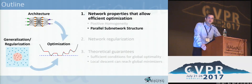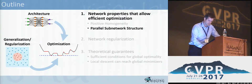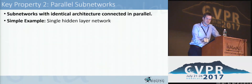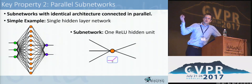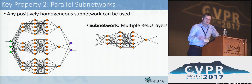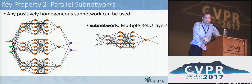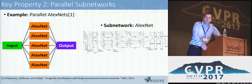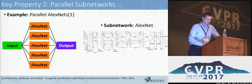The second important architectural property is parallel subnetwork structure. We define a network composed of subnetworks with an identical architecture all connected in parallel. The simplest example is a neural network with a single hidden layer, where the subnetwork is just a single ReLU unit with three inputs and two outputs, connected in parallel. Our framework is compatible with any positively homogeneous subnetwork — for instance, a more complicated subnetwork with four hidden layers, with three connected in parallel. You could even define your subnetwork to be AlexNet, which is positively homogeneous with a minor modification, and connect them all in parallel within this analytical framework.